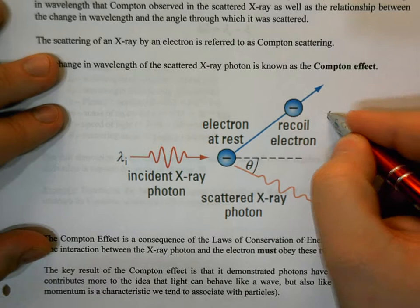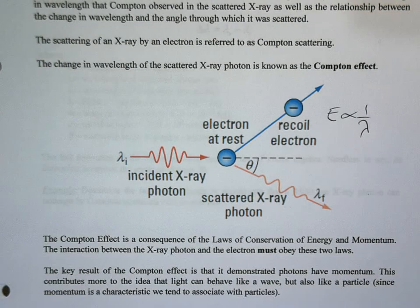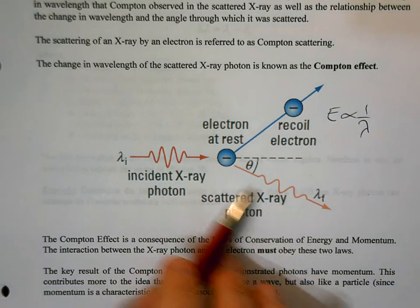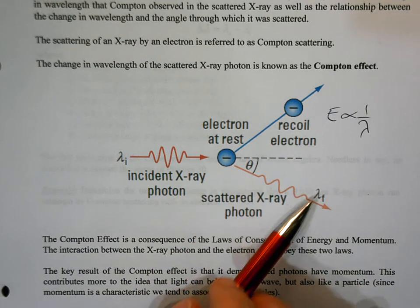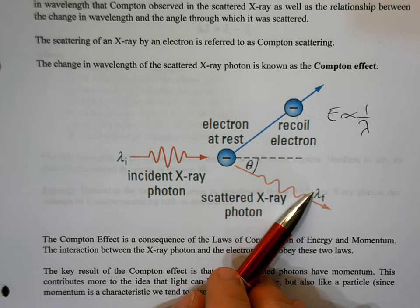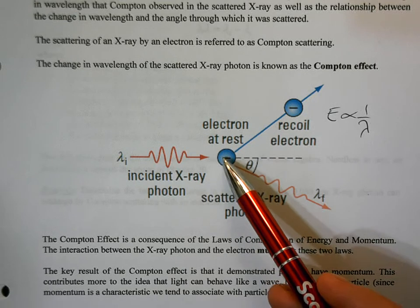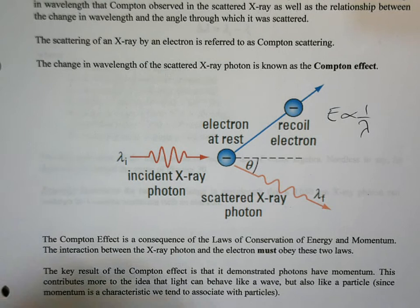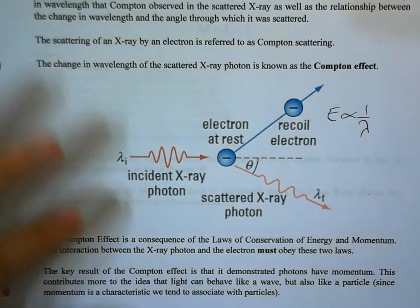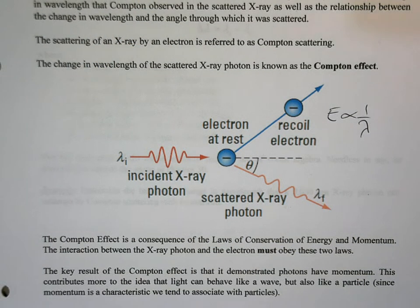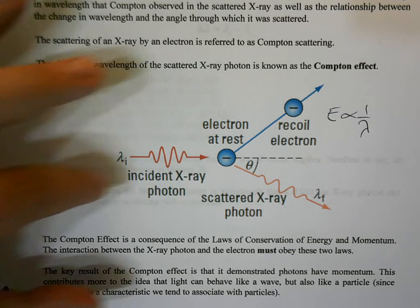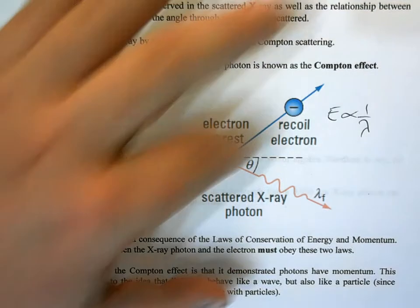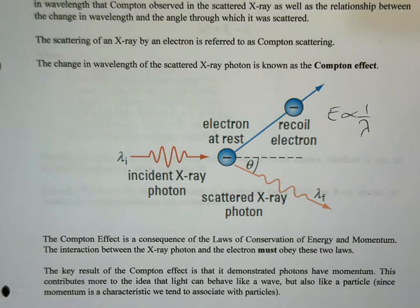Recall that energy is proportional to one over wavelength. So if this scattered photon has an increase in wavelength, it means it has a slight decrease in energy. We know from conservation of energy that that energy would have gone into the electron at rest to cause it to start moving. This whole application of looking at photons and scattering is what we call the Compton Effect. A photon comes in — usually an x-ray — hits an electron, that electron recoils, and the photon scatters with a larger wavelength.